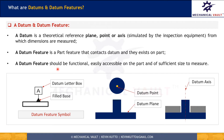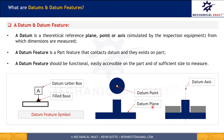The first criterion is that the datum feature must be functional. For example, if we have two parallel faces, we could use either as a primary datum to establish a datum plane. But we must check how the part is assembled at the next level. If the top face is touching the next-level part and not the bottom face, we should use the upper face as the datum feature to establish the datum plane.